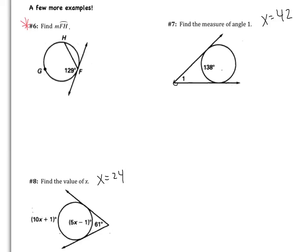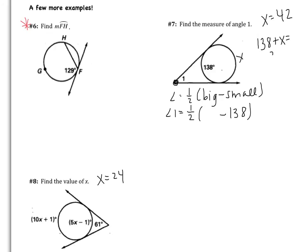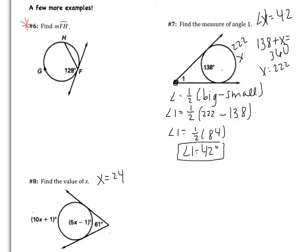For example 7, the vertex is outside the circle, so the angle equals one half of big arc minus small arc. The small arc is 138. Since the entire circle is 360, the big arc x satisfies 138 plus x equals 360, giving x equals 222. So angle 1 equals one half of 222 minus 138, which is one half of 84, giving angle 1 equals 42 degrees.